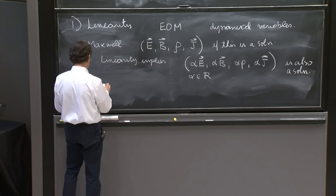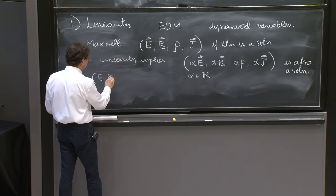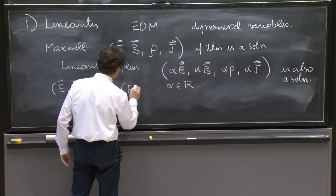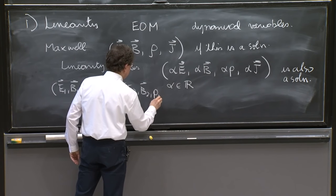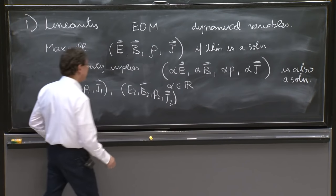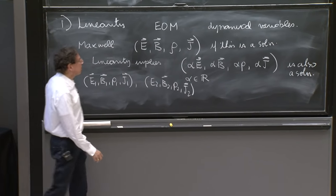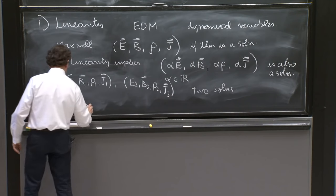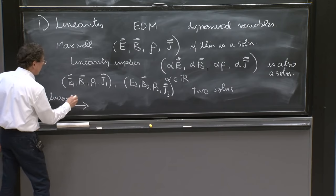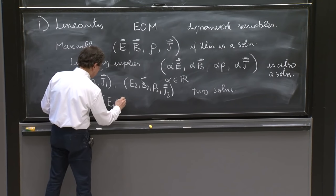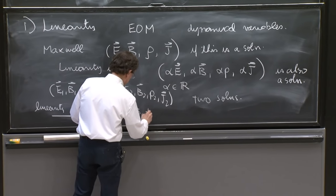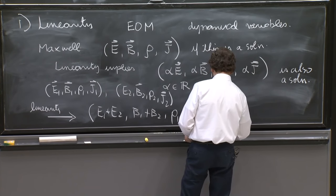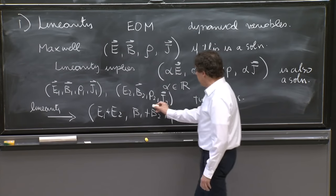It also implies more. Linearity means another thing as well. It means that if you have two solutions E1, B1, ρ1, J1, and E2, B2, ρ2, J2, if these are two solutions, then linearity implies that the sum E1 plus E2, B1 plus B2, ρ1 plus ρ2, and J1 plus J2, is also a solution.